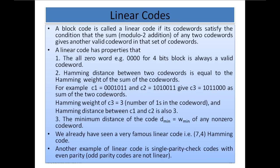The second property is that the Hamming distance between two codewords is equal to the Hamming weight of the sum of the codewords. For example, C1 = 0 0 0 1 0 1 1 and C2 = 1 0 1 0 1 1, giving C3 = 1 0 1 1 0 0 0 as their modulo-2 sum. The Hamming weight of C3 is 3, and the Hamming distance between C1 and C2 is also 3.